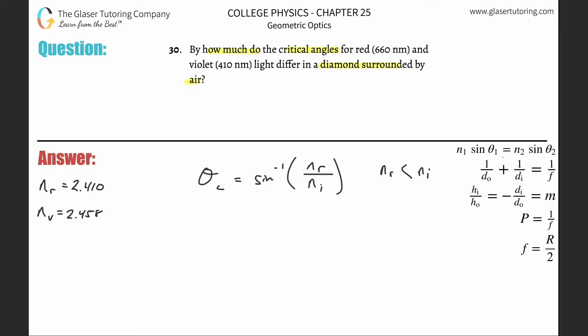Let's find the critical angle for violet. This is going to be inverse sine of the index of refraction in air divided by the index of refraction for violet light in diamond, 2.458.